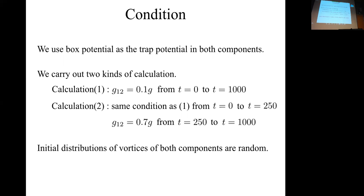At t equals 250, we change G12 from 0.1G to 0.17G, so a strong inter-component interaction. This can be achieved by using Feshbach resonance. The initial distribution of vortices for both components is random.